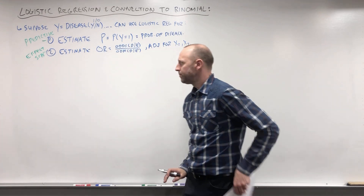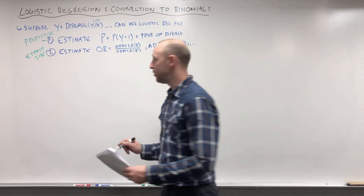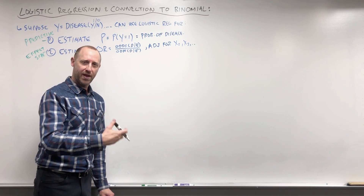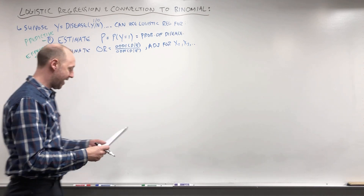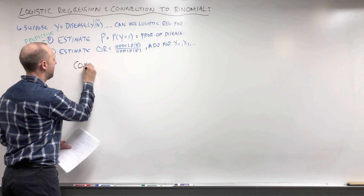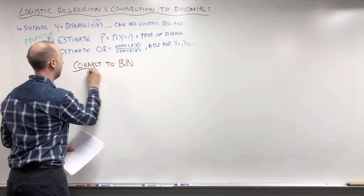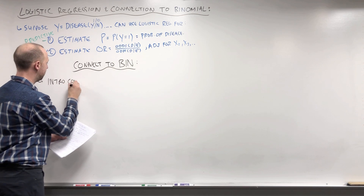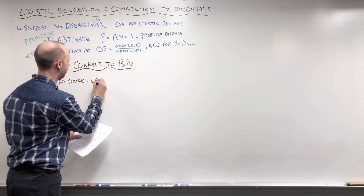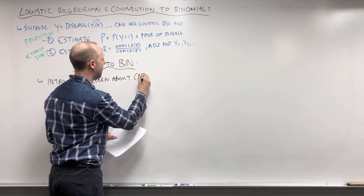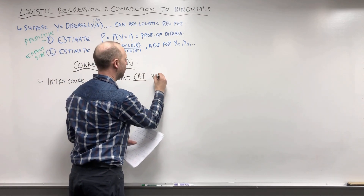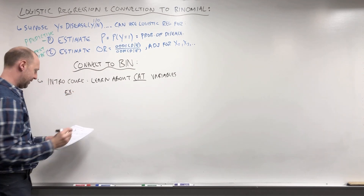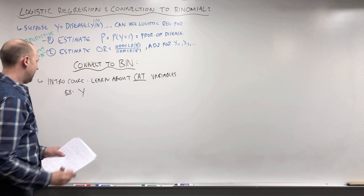What I'd like to do is close a little bit of a loop that's hanging around. What we're going to do is try and connect this to the binomial distribution. I'm going to reach back to what you tend to see in an intro stats or intro probability course, go from there and build up to logistic regression and close a little bit of a loop that's been hanging open. We're going to connect to the binomial. Suppose Y is some disease — let's say evidence of coronary heart disease. I'm picking this for a reason.